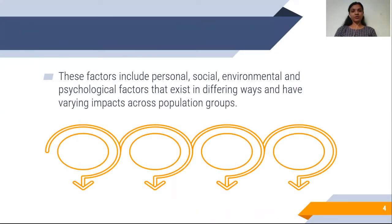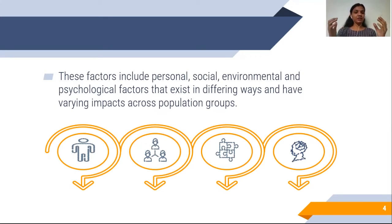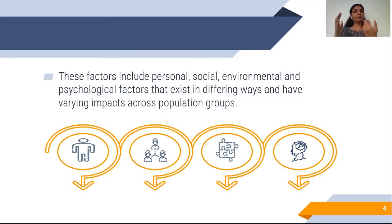These factors include social factors, personal factors, environmental factors, and psychological factors which exist in different ways and have varying impact across the population. If we take one personal factor or one environmental factor, it can be facilitative for one person and the same factor can be inhibitory or impeding for another.